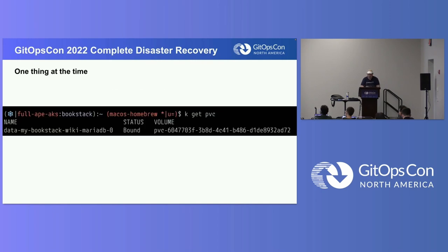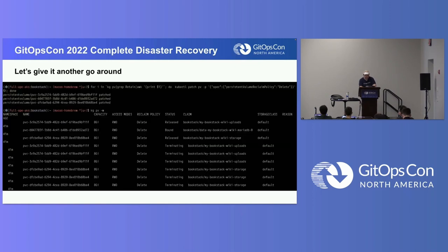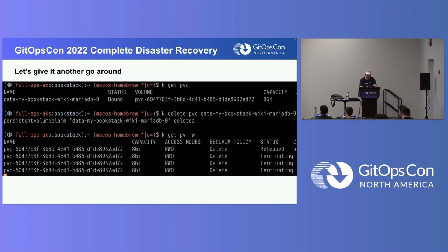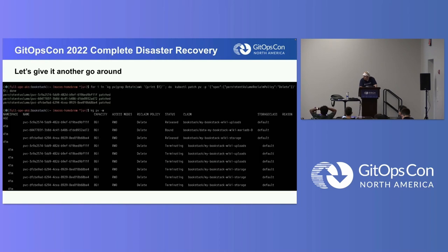Now we can recall that our PVCs were deleted, except for the MariaDB one. So we could reconstruct them. But we're still just poking around, so let's put the delete policy back and just wipe them out. And then when we delete that claim, the volume is really gone again.